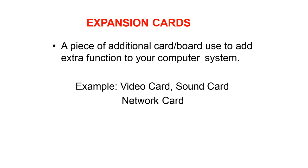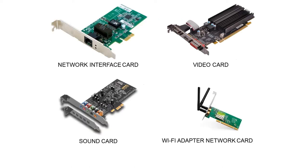Another integral part is expansion cards — additional cards or boards used to add extra functions to your computer system. Examples include video card, sound card, and network card. A network interface card (NIC) is a hardware component that allows a computer to connect over a network, also called a network adapter or LAN adapter. A video card, also called a graphics card or display adapter, generates output images to a display device such as a monitor. A sound card provides input and output of audio signals. Wireless network interface cards are designed for Wi-Fi and often include an antenna for better wireless reception.